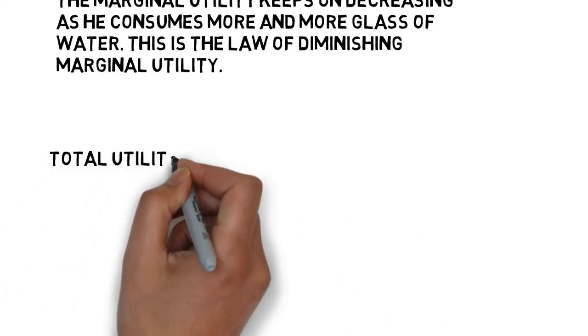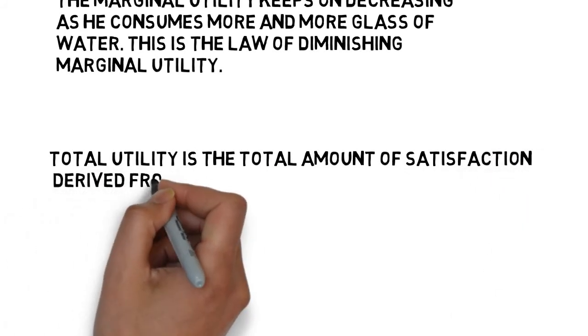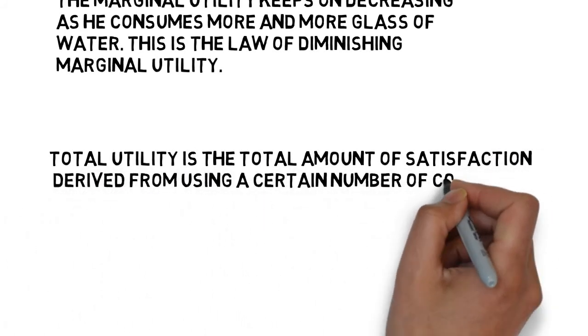Total utility is the total amount of satisfaction derived from using a certain number of commodities. In the example, total utility when Den consumes two glasses of water is 18, which is 10 plus 8. Total utility when Den consumes three glasses of water is 24, which is 10 plus 8 plus 6.